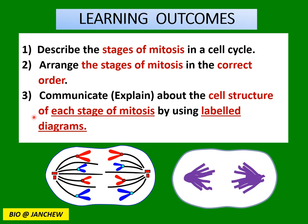Number three, you should be able to communicate about the cell structure of each stage of mitosis by using labelled diagrams. This means you should be able to explain what happens to the cell and the chromosomes at each stage of mitosis, including labelling and drawing the diagrams.